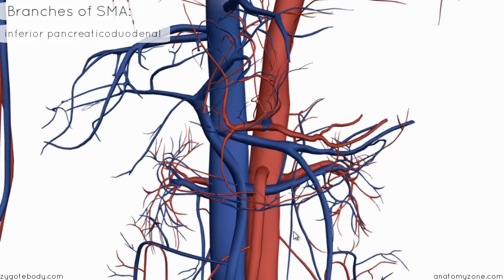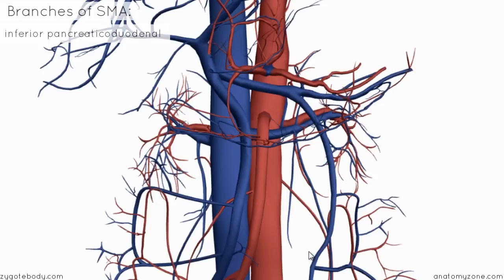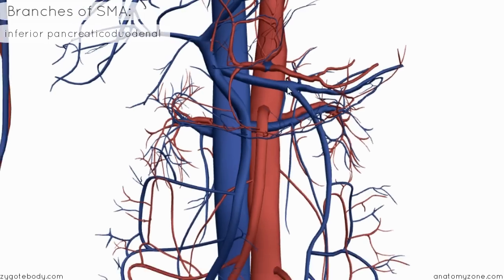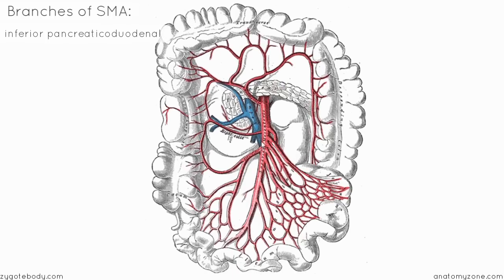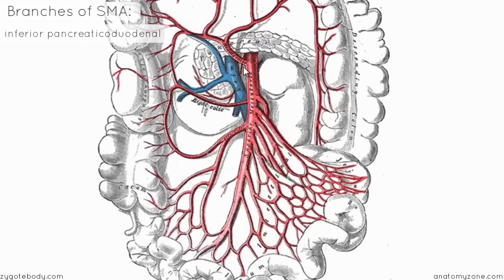I'm going to switch over to a diagram and show you the rest of the branches of the superior mesenteric artery. We're looking at a view of the SMA with the superior mesenteric vein running alongside it to the right, and the pancreas sitting on top of it. You can see how these vessels emerge just under the neck of the pancreas. The first branch visible just after the SMA comes out from underneath the pancreas is the middle colic artery. We'll look first at the vessels coming off the left side of the SMA.